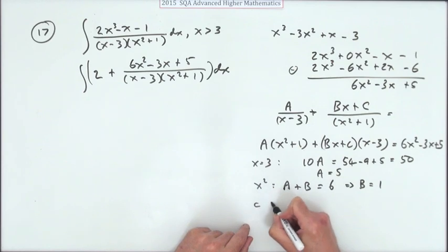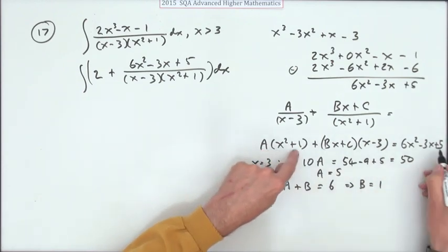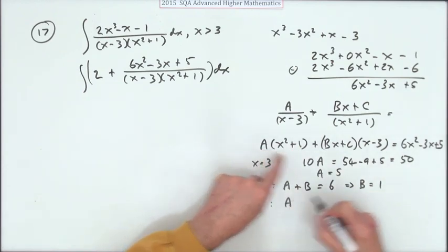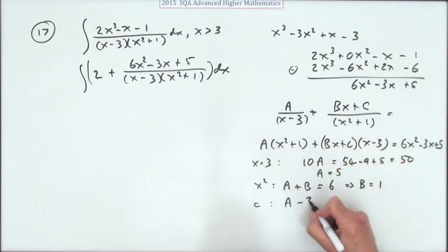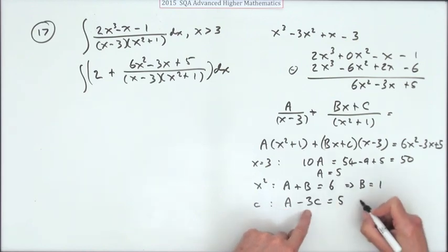The other easy one usually is the constant. Forming the constant term 5 at the end, I've got an A and I've got minus 3C, and that should make 5. But A is 5, so that means that 3C is worth nothing, so C is equal to 0.